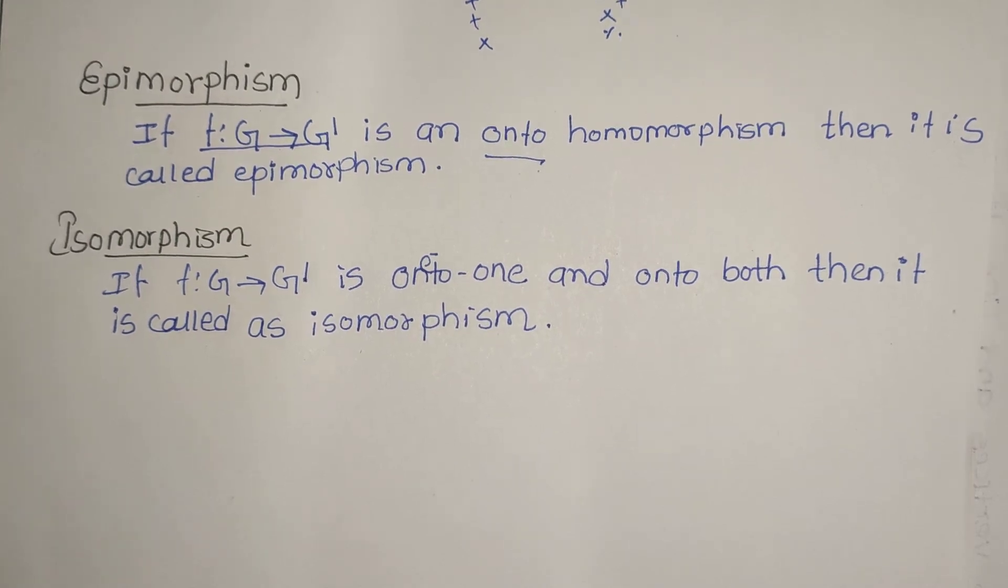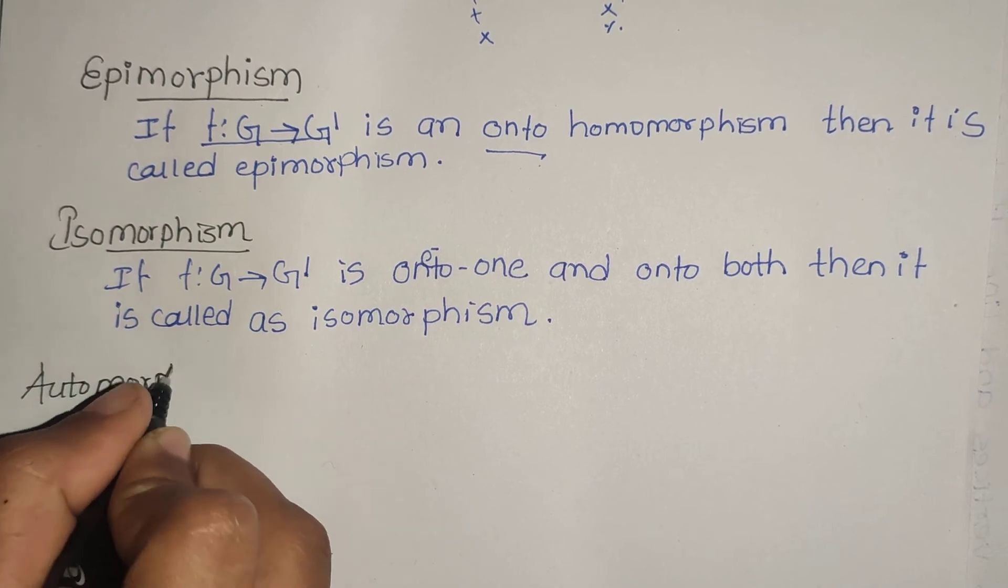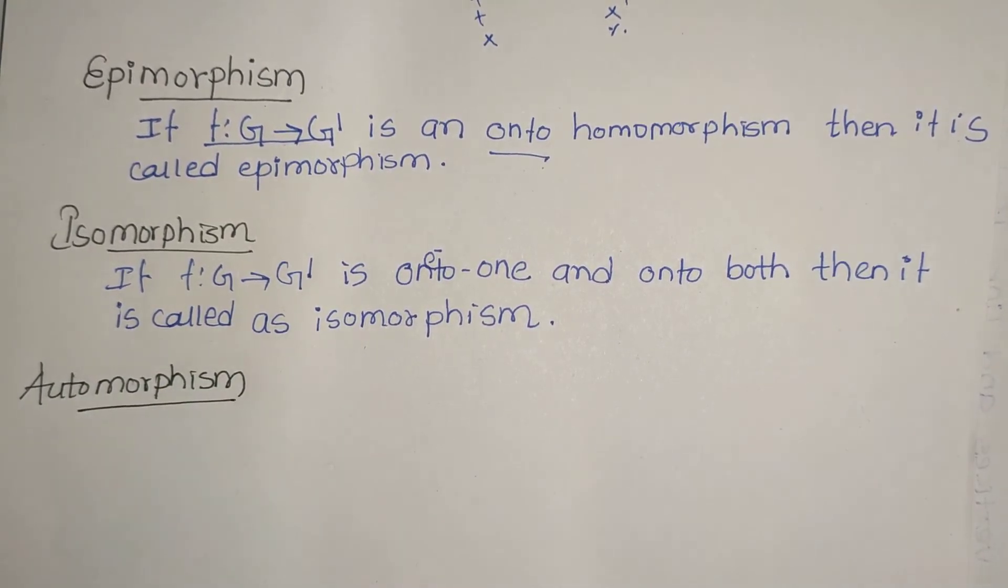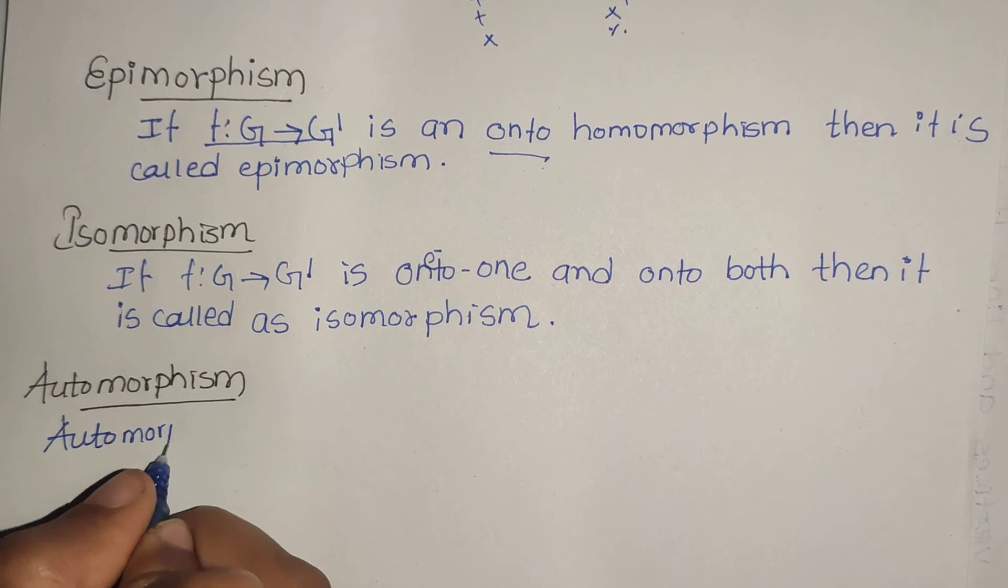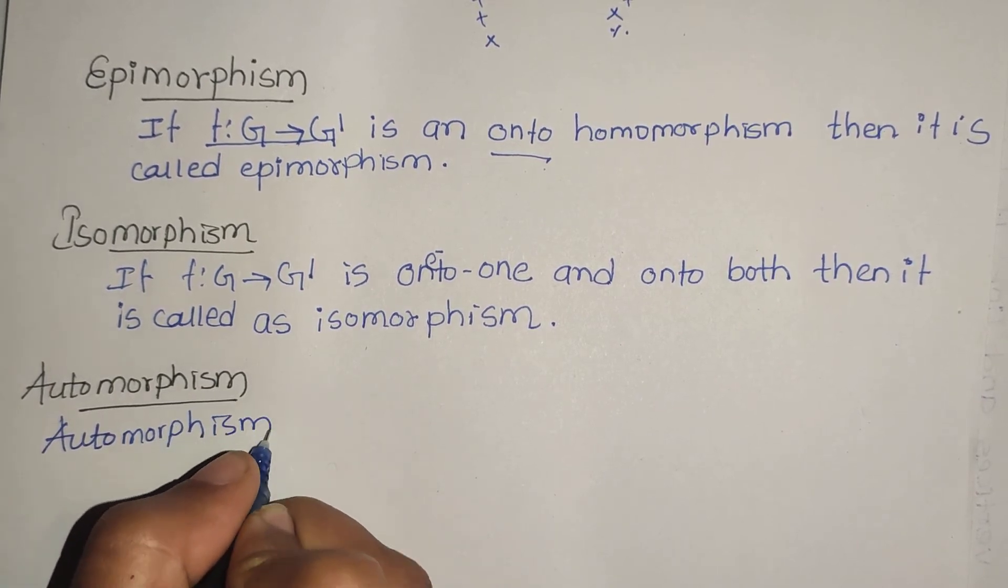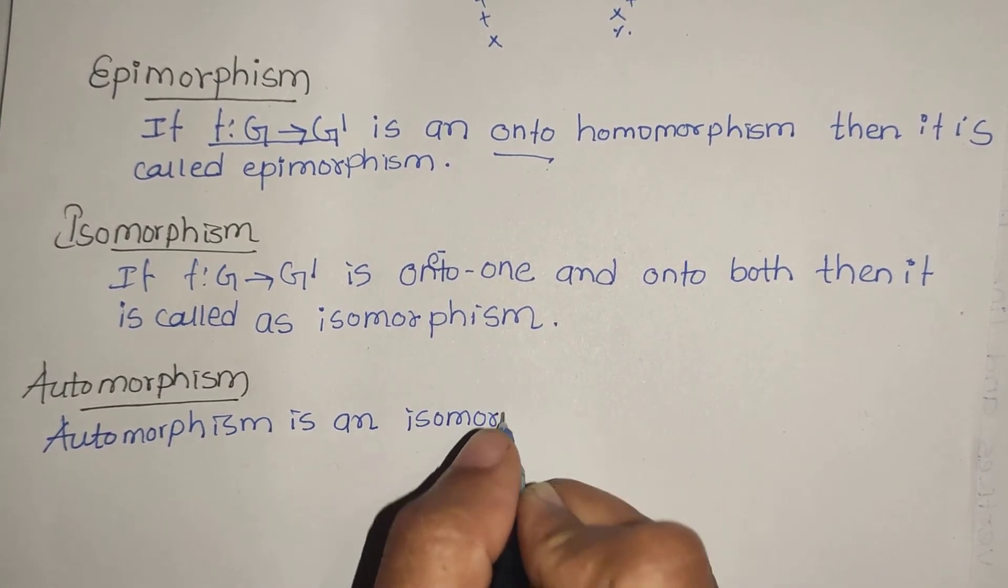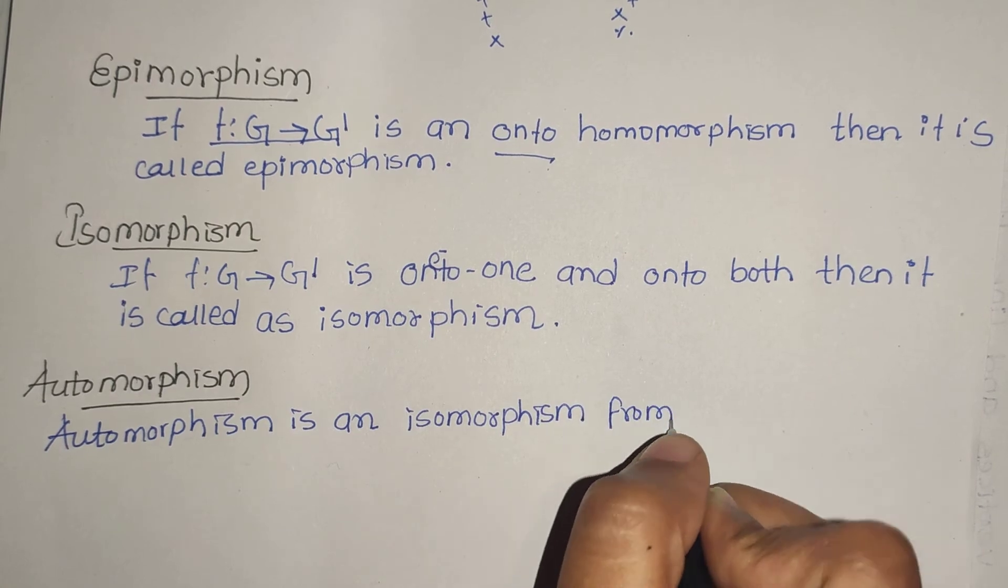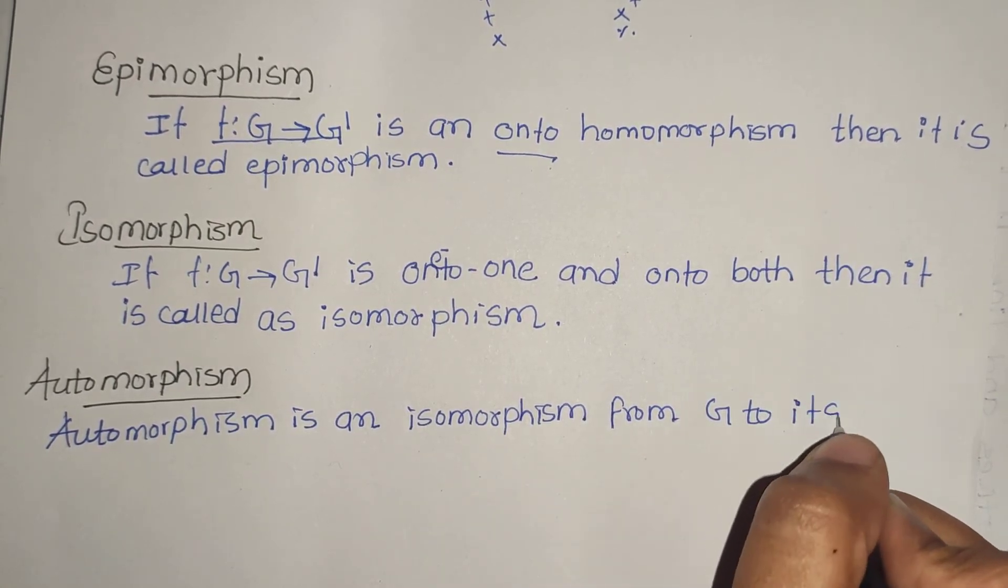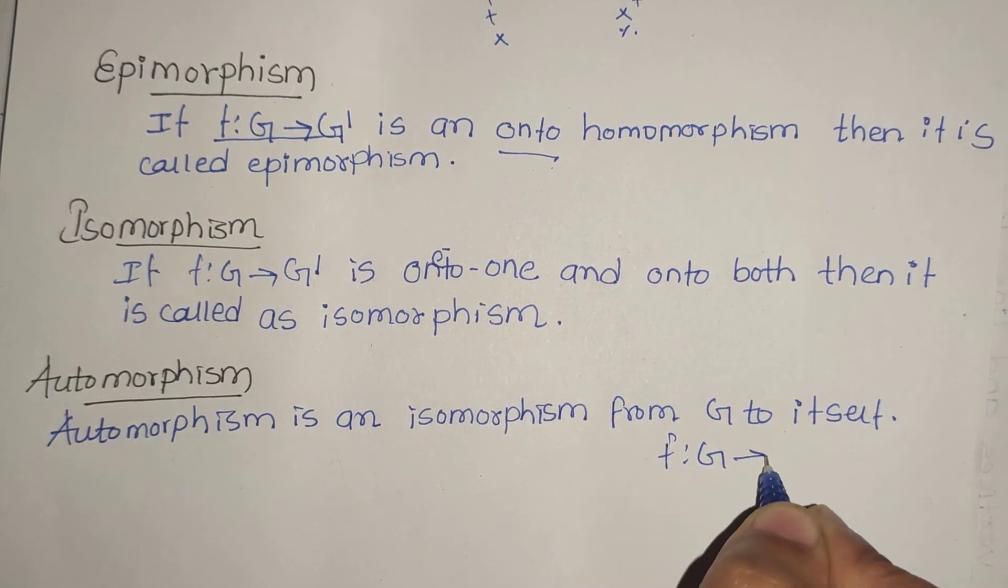Another one is automorphism. Automorphism is simply an isomorphism from G to itself. An isomorphism from G to G.